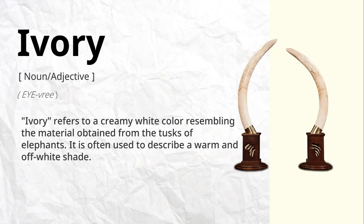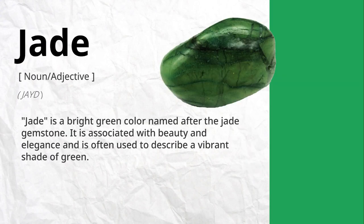Ivory refers to a creamy white color, resembling the material obtained from the tusks of elephants. It is often used to describe a warm and off-white shade. Jade is a bright green color named after the jade gemstone. It is associated with beauty and elegance, and is often used to describe a vibrant shade of green.